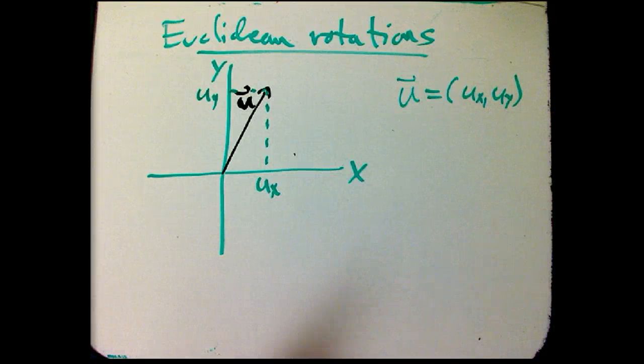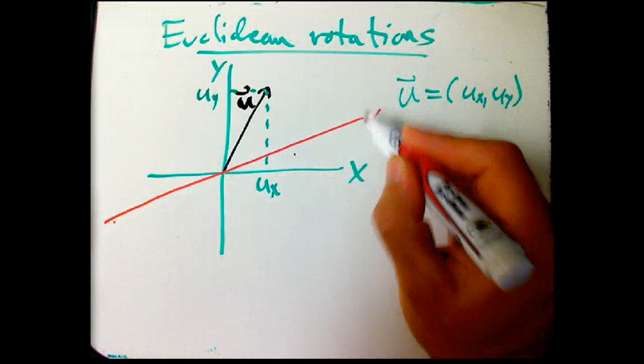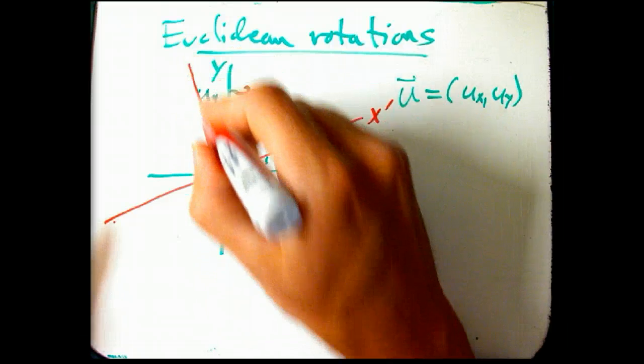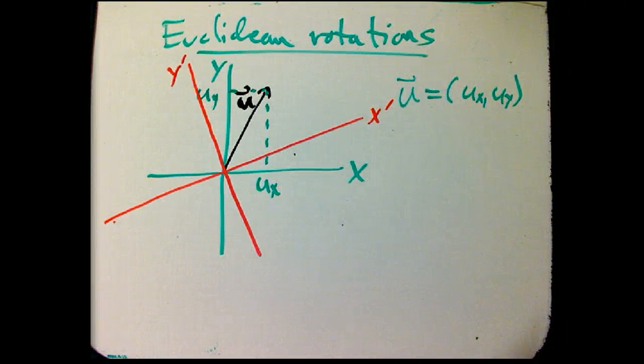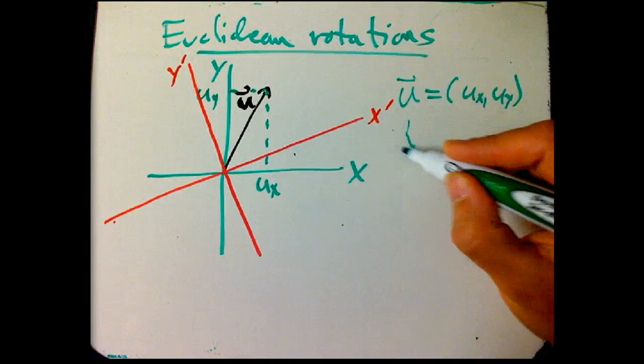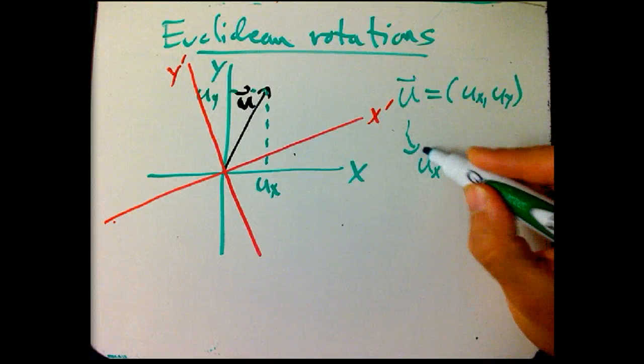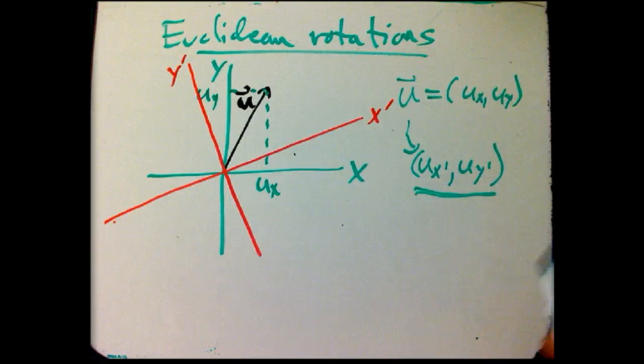And now, I've got another coordinate system, the X prime, Y prime coordinate system. It's still a nice orthogonal coordinate system. We don't want to try to use a totally general coordinate system. And in relativity, we're always going to use a Lorentz coordinate system. And we want to figure out, this has another expression, UX prime, UY prime, two different numbers. And I want to figure out the relationship of these numbers and these numbers.